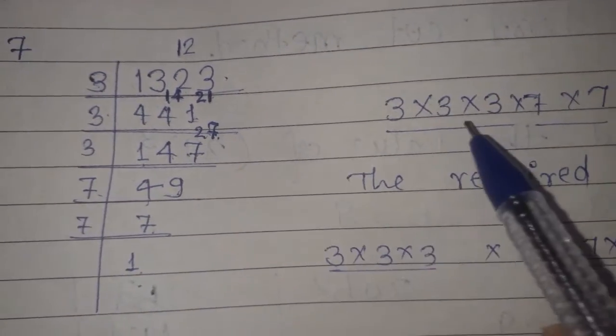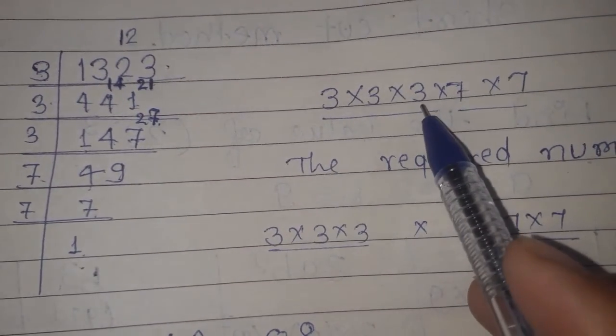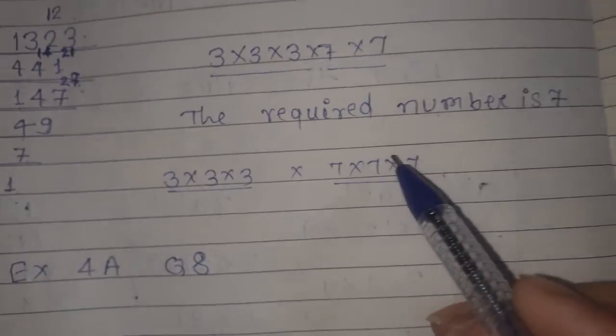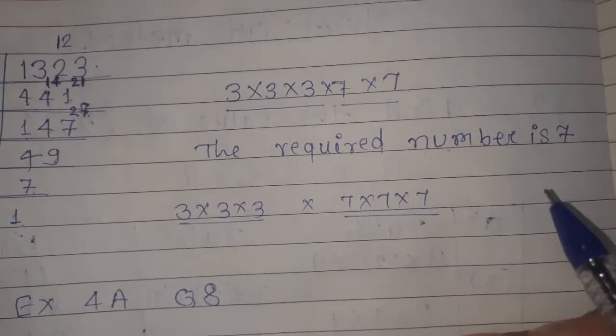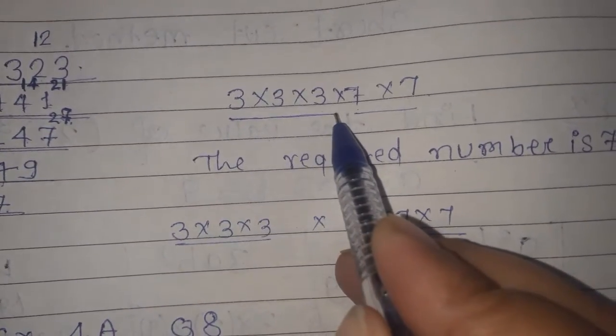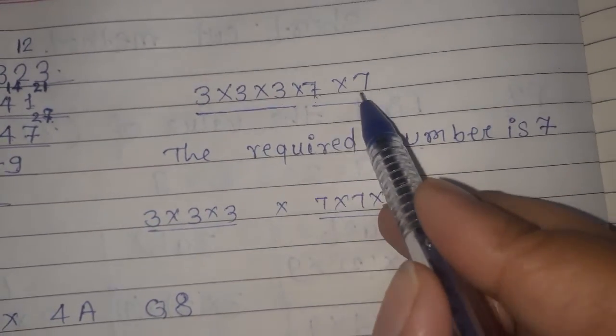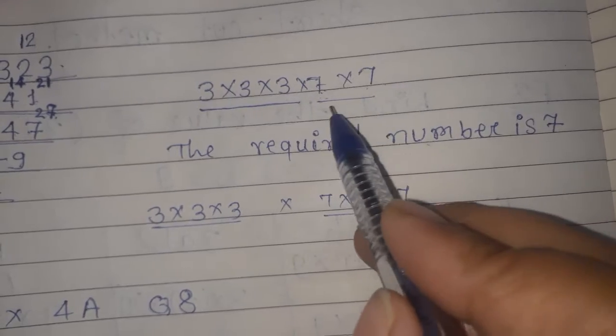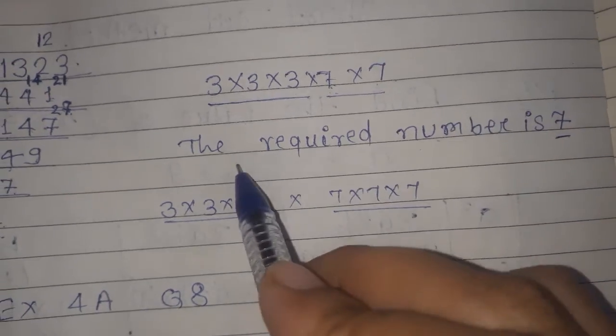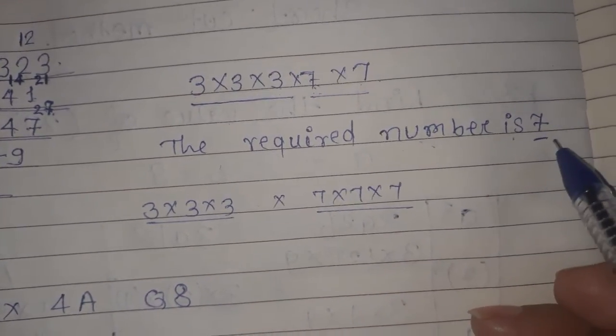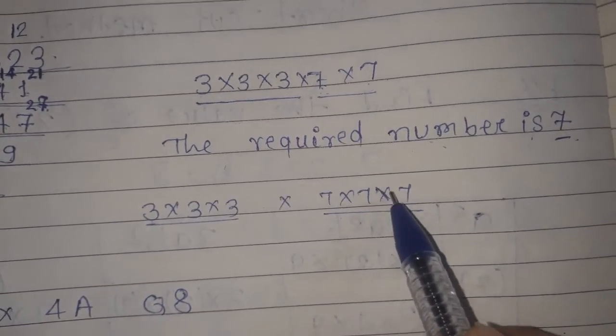Here we have 1323 with factors 3 into 3 into 3 into 7 into 7. The question asked which number to multiply to be a perfect cube. Now you can see 3 complete, 7 into 7 into 7 complete.